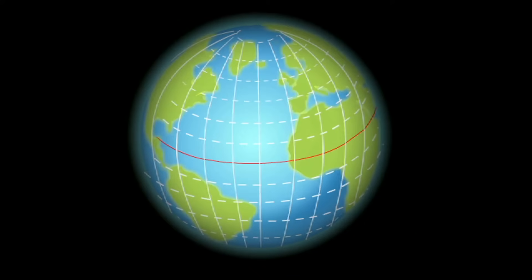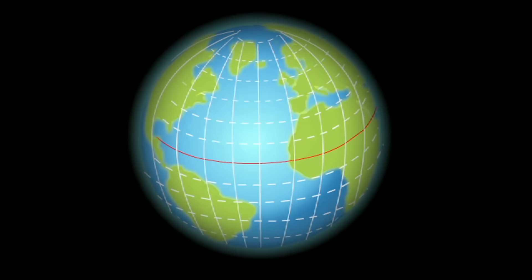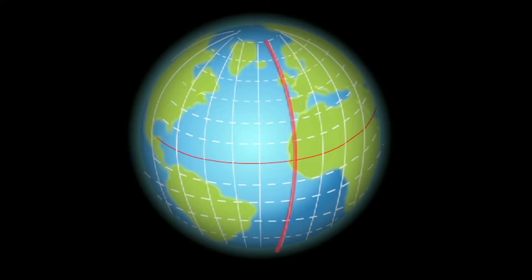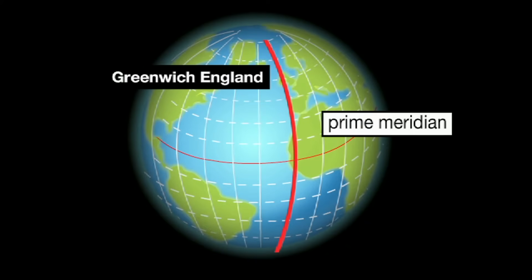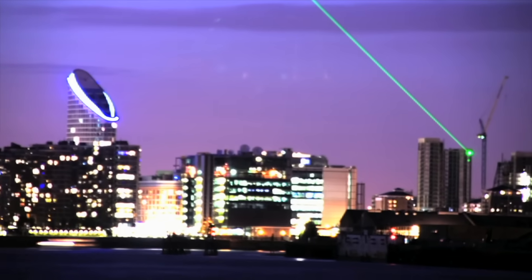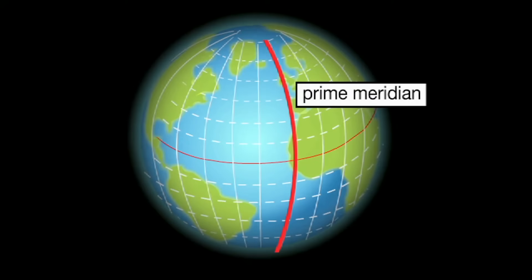Lines of longitude are also measured in degrees from a point starting at zero. Unlike latitude, which finds its zero mark from the naturally widest point of the Earth — the equator — longitude starts at a zero point called the prime meridian. The prime meridian is located at zero degrees longitude. It runs through Greenwich, England, and its exact spot is marked with a laser beam that shoots out of the Royal Observatory in Greenwich.